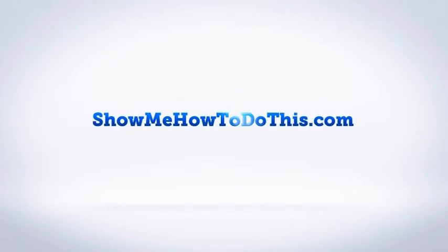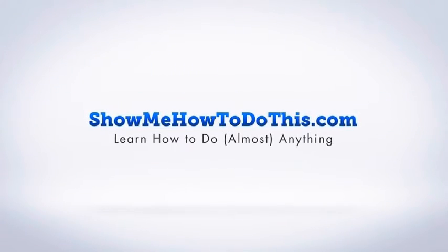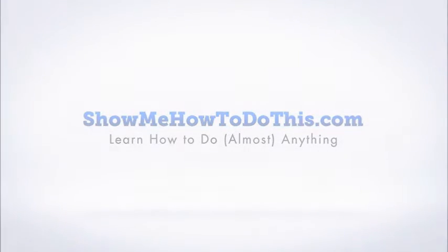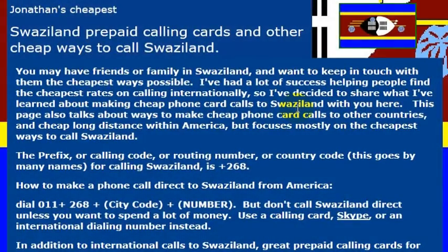If you want to reach Swaziland and you're trying to call from the United States, the easy way to do that is just to dial directly. There are some less expensive ways to make phone calls and we're going to walk through those in just a minute. But if you want to reach Swaziland, you'll need to know the phone number and the country code, which is 268.